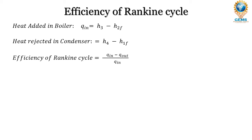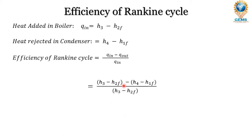The efficiency of the Rankine cycle is equal to heat added minus heat rejected divided by heat added — that is, Q_in minus Q_out divided by Q_in. So we can write this as: H3 minus H2F minus (H4 minus H1F), all divided by H3 minus H2F.